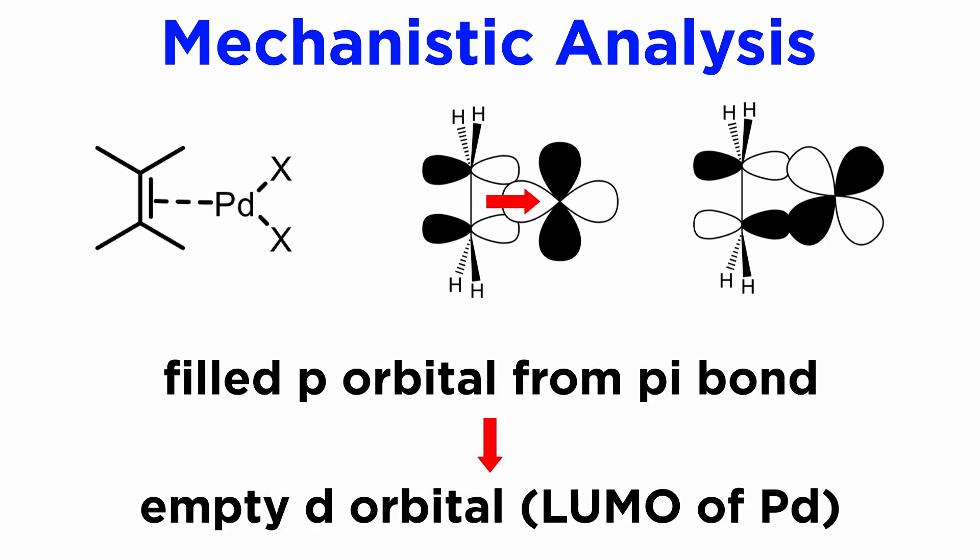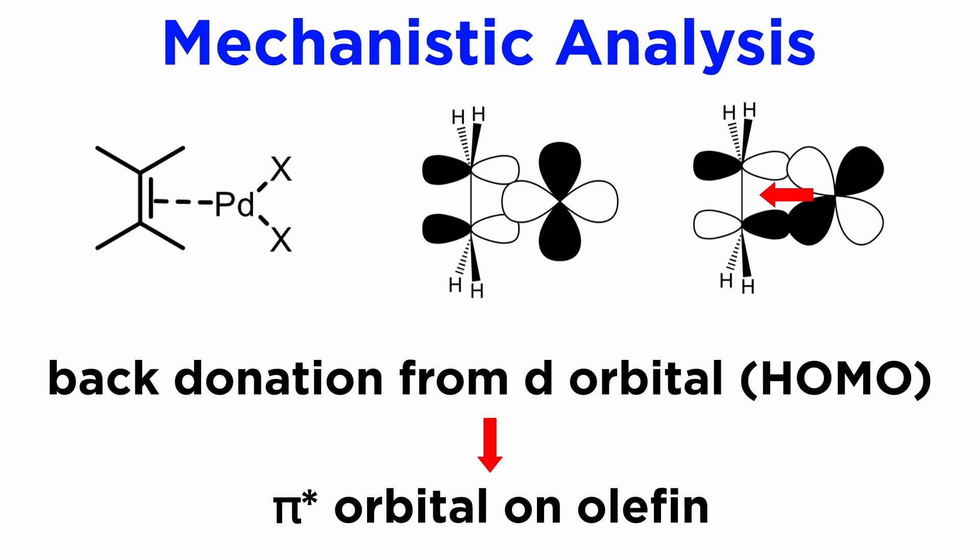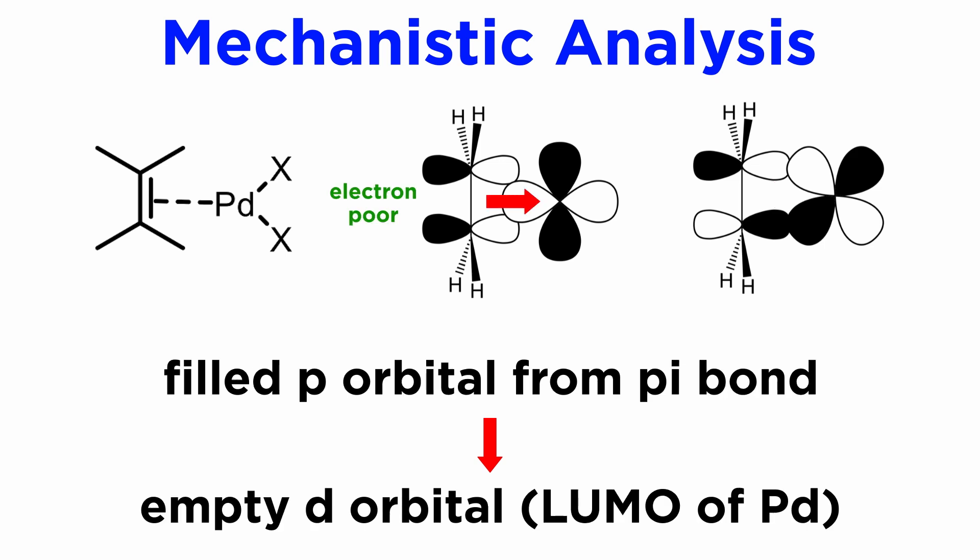The key interaction consists of an electron donation from the filled olefin pi bond into an empty d-orbital, the LUMO of palladium-2. There is also some electron back donation from a filled d-orbital of palladium, the HOMO, into a pi-star olefinic orbital, but this is not enough to compensate for the donation of electron density by the olefin, which remains electron-poor.